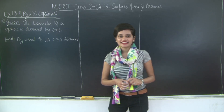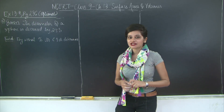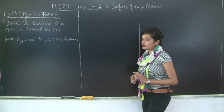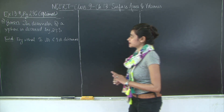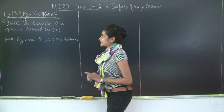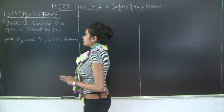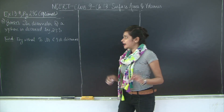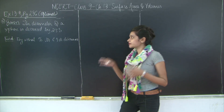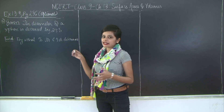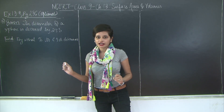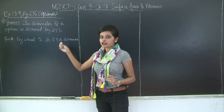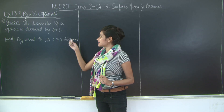Hello students, welcome back. Let us take a look at the last question of exercise 13.9 of chapter 13, Surface Areas and Volumes. It states that the diameter of a sphere is decreased by 25%. Because of this decrease, the curved surface area will also be affected — we need to find by what percent the curved surface area decreases.